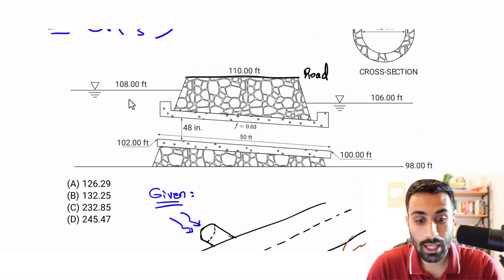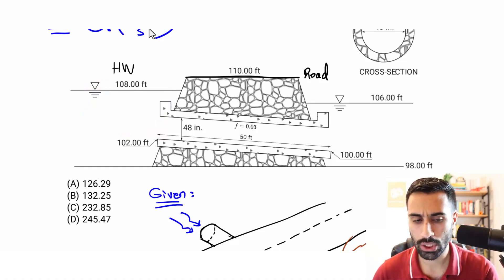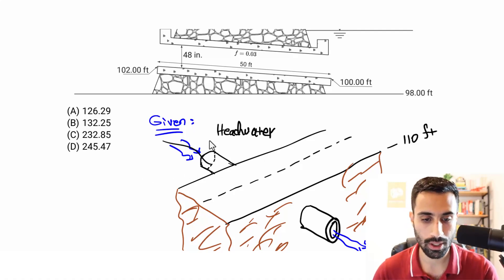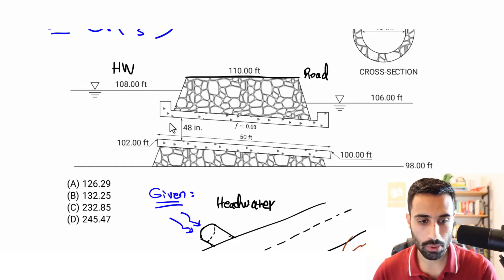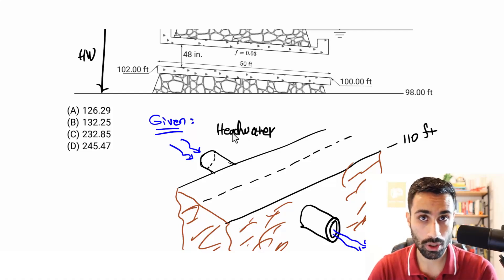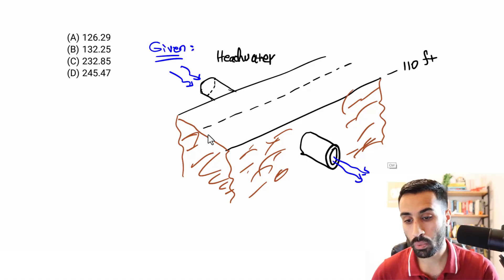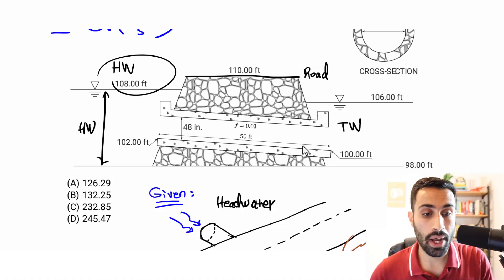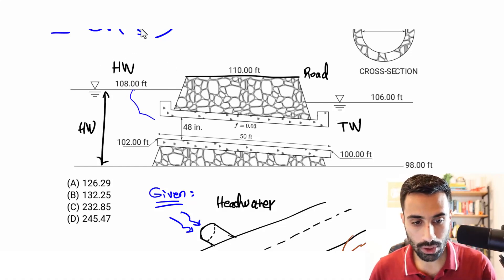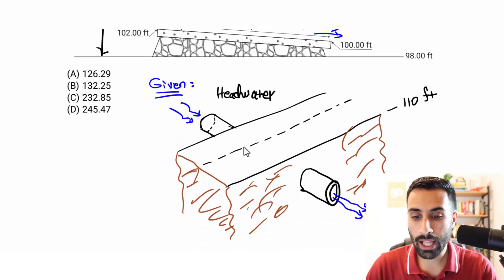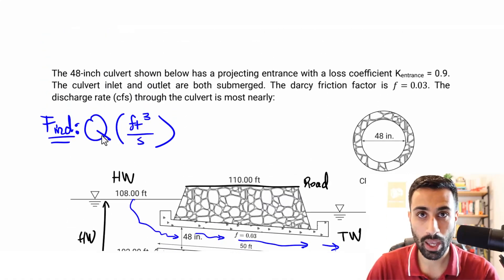The water travels through the culvert pipe from the headwater side to the tailwater at the outlet. That's what's going on here. Now, if you're seeing this for the first time, we want to find Q. How are you going to find Q? We have the friction factor, which tells us to use the Darcy-Weisbach equation. We're given the diameter of 48 inches, and we're given the loss coefficient K at the entrance. We need the discharge.